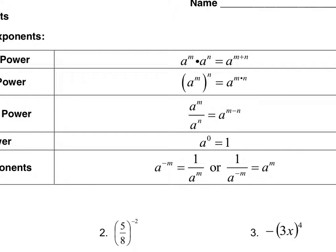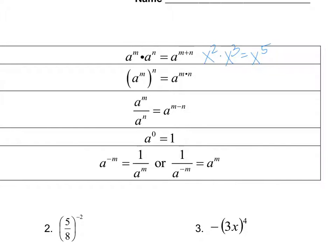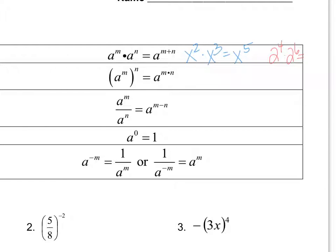So let's say you had x to the second times x to the third. Notice that the bases are the same, and when the bases are the same you just add the exponents, so this is x to the fifth. Another example: two to the fourth times two to the sixth. A common mistake is multiplying the bases together — you keep the base the same, so this just becomes two to the tenth. A big note: keep the bases the same and just add the exponents.